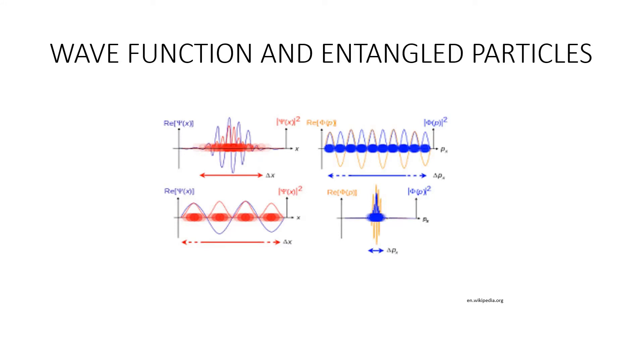Wave function in quantum mechanics is a variable quantity that mathematically describes the wave characteristics of a particle. The value of the wave function of a particle at a given point of space and time is related to the likelihood of the particle being there at the time. It is possible to separate two subatomic particles and both are described by a single wave function. These two particles are entangled.